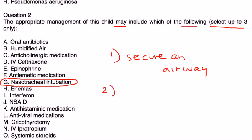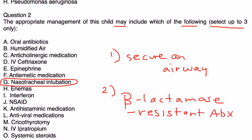The next thing is you want to give antibiotics, and the antibiotics are beta-lactamase-resistant antibiotics, and they're given IV, and the most commonly used one is ceftriaxone. So that would be choice D.